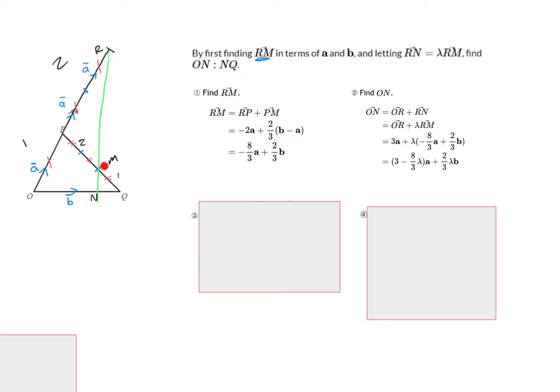So, R to N is an extension of R to M. So, it's our vector R M multiplied by a constant. Multiplied by a value that extends our line. And we're going to call that lambda. That symbol there, Greek letter lambda, we're using it as a multiplier.